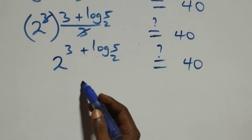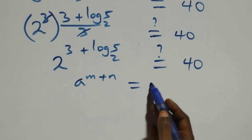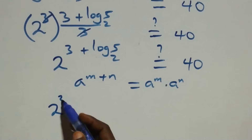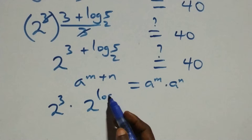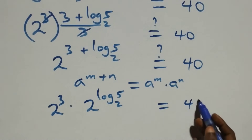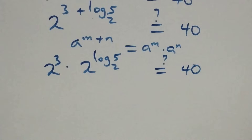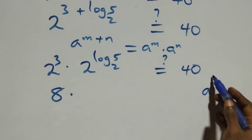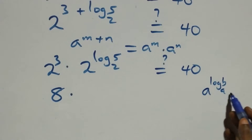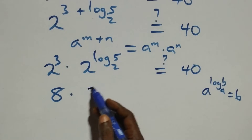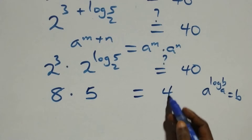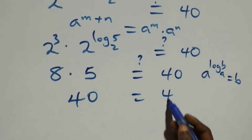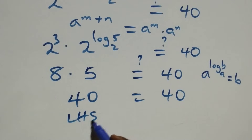Using the index law a raised to power m plus n equals a raised to power m times a raised to power n, this becomes 2 raised to power 3, times 2 raised to power log 5 base 2. Since 2 cubed is 8, and using the rule a raised to power log b base a equals b, we get 8 times 5, which equals 40. The left hand side equals the right hand side.